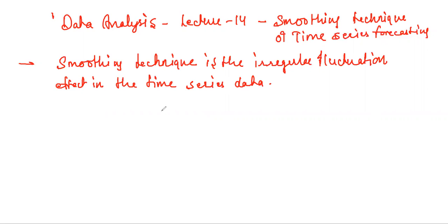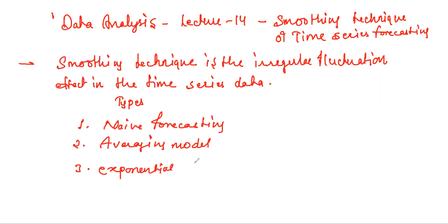The smoothing technique is used to assess the discrete nature of time series data. The general categories of smoothing techniques are described by three processes: first one, naive forecasting smoothing; second one, averaging model; and third one, exponential smoothing.